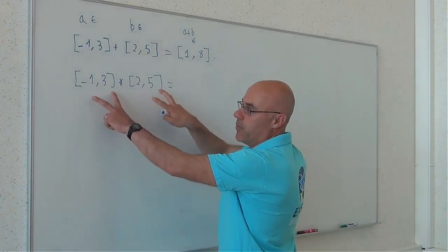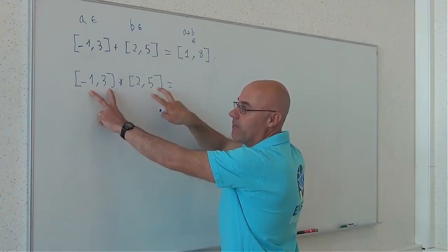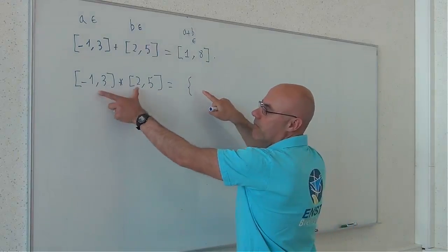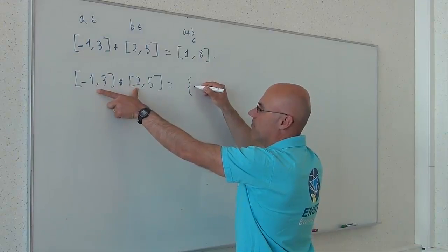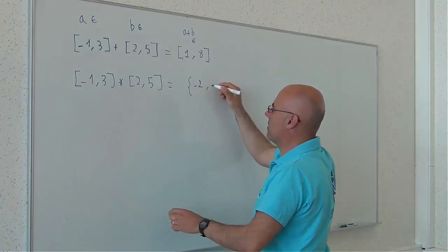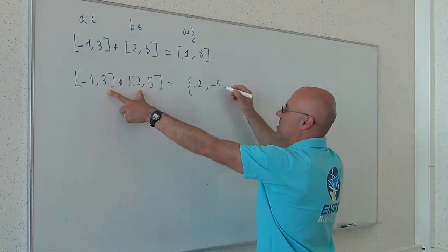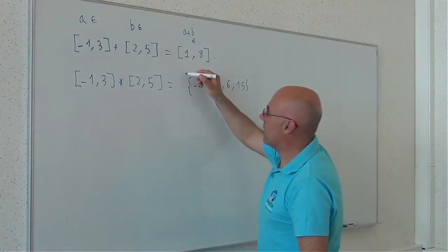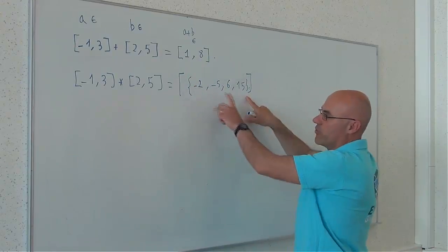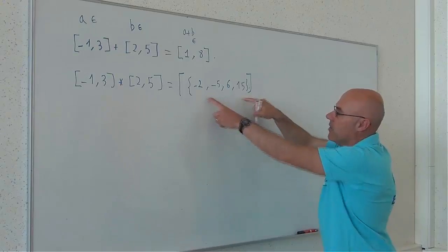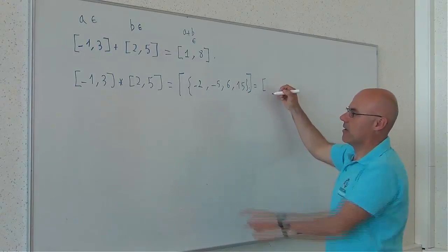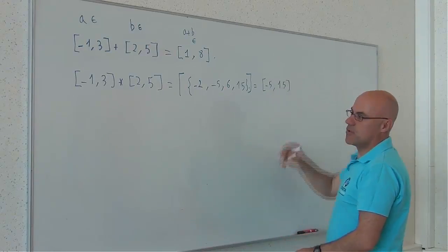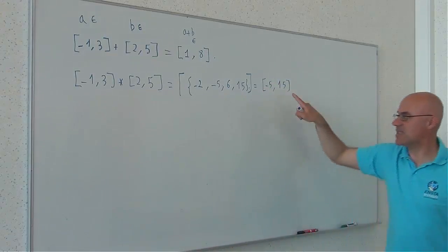I will consider all possible products of all bounds. So, I will take minus 1 times 2, I obtain minus 2, minus 5, 6, 15. So, I will take the smallest interval which contains all these elements and I will obtain minus 5, 15. So, the product of these two intervals is this interval.